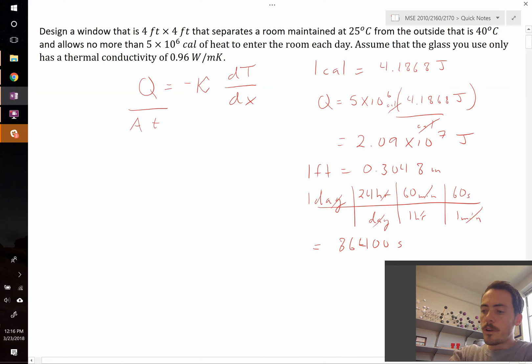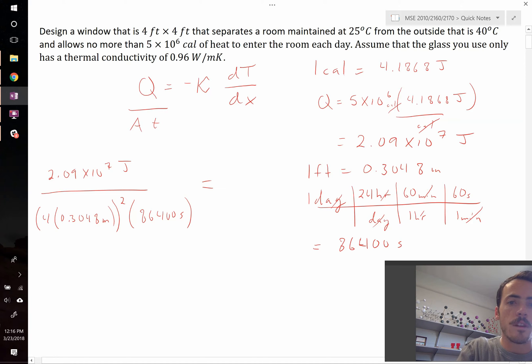Okay, so now that we've done those conversions we are ready to get started. So let's write out Q. Q on our left hand side is 2.09 times 10^7 joules. That's going to be divided by 4, and turning that into meters is multiplying it by 0.3048 meters. That whole thing is going to be squared, which will give us meters squared, and then we have time, 86,400 seconds. So that's the left hand side of the equation.